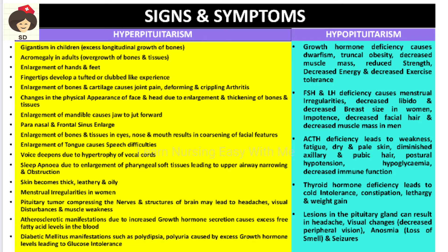Pituitary tumors can compress nearby nerves, causing headache, visual disturbances, and muscle weakness. Increased growth hormone secretion causes increased fat mobilization to the blood from tissues, depositing in blood vessels and causing atherosclerotic changes. Patients with increased growth hormone will also have increased blood glucose, as insulin cannot be produced in excess amounts to control all the glucose, resulting in diabetes mellitus.